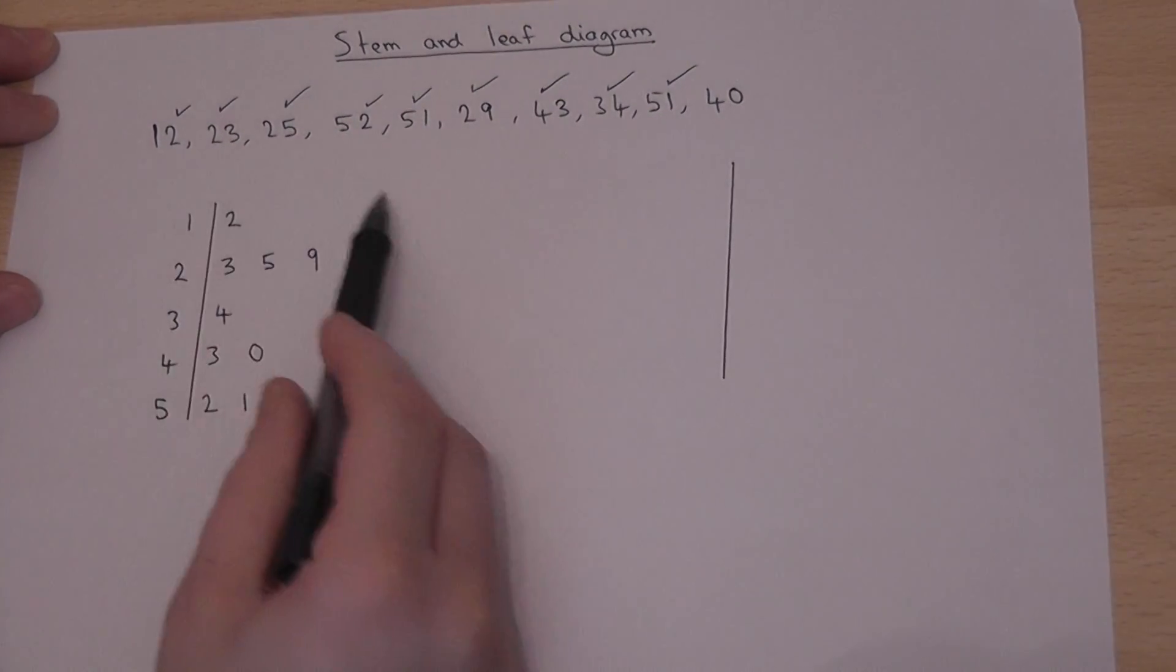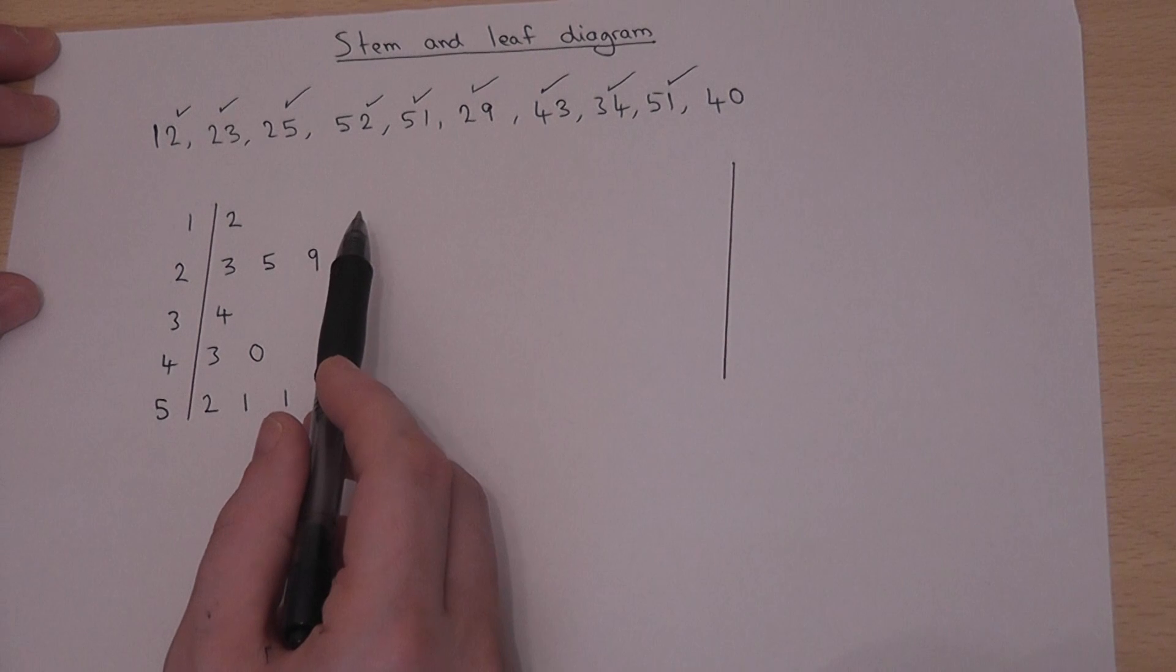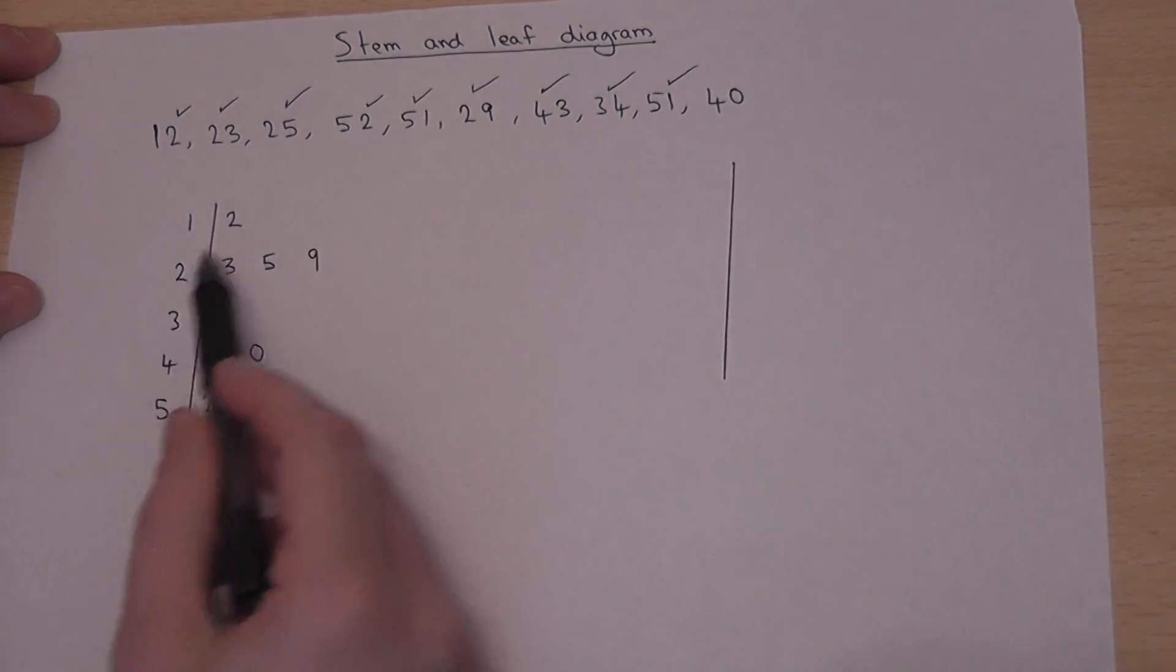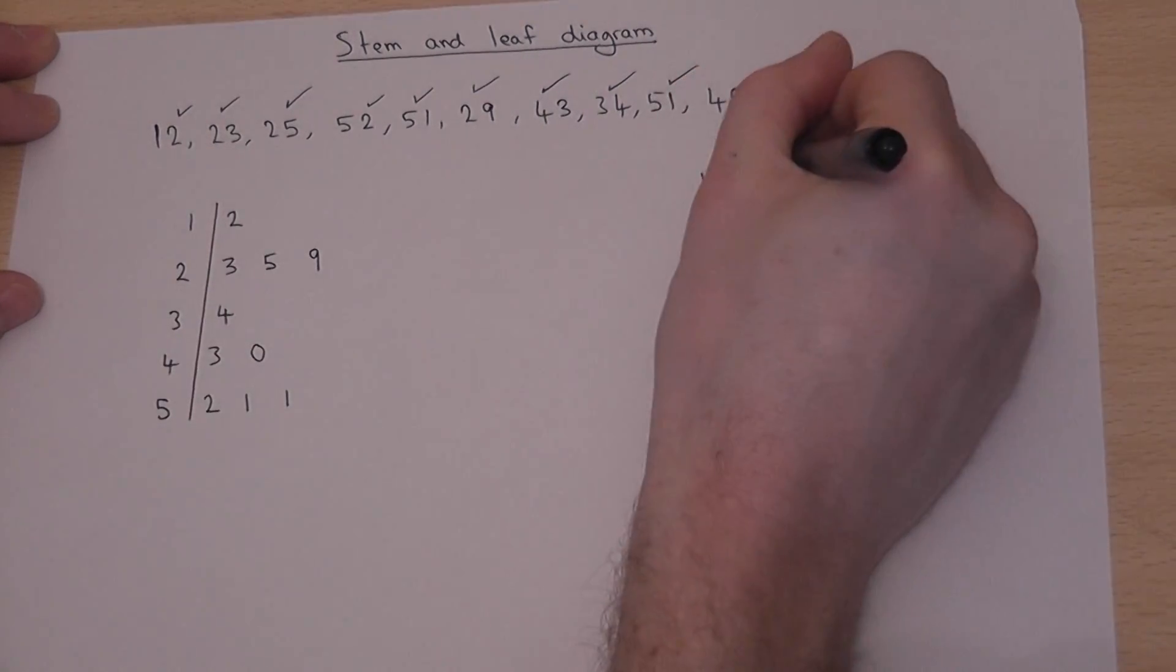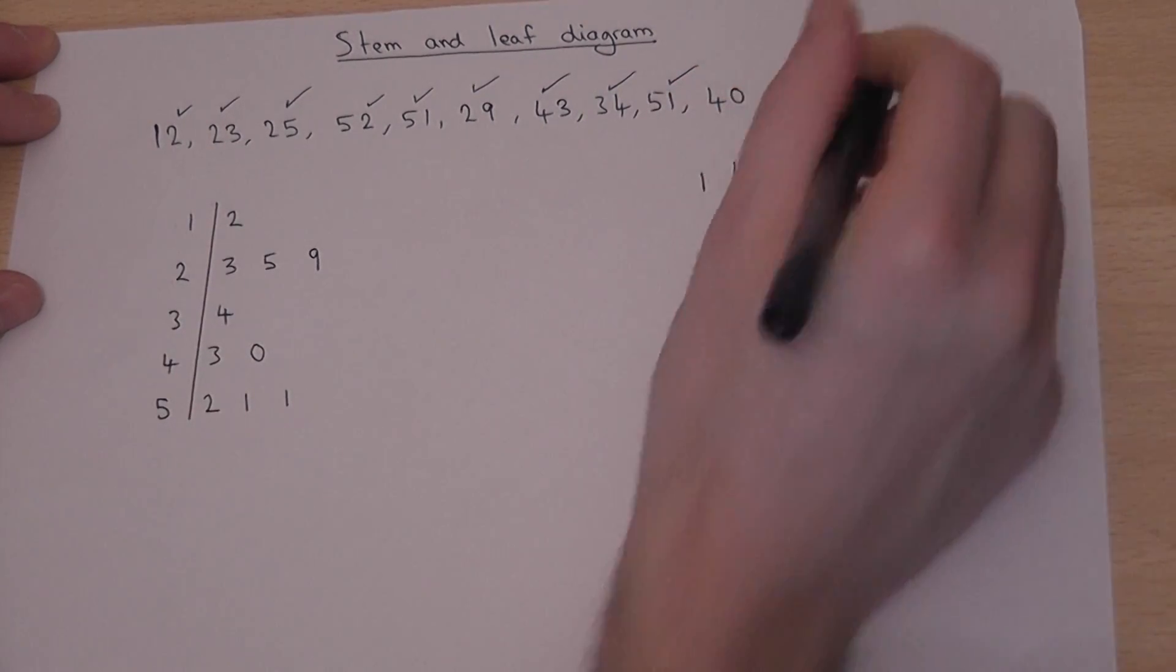Now this is called an unordered stem and leaf diagram. It often makes sense to then order it. So I go through each row in turn and order the numbers that are there.